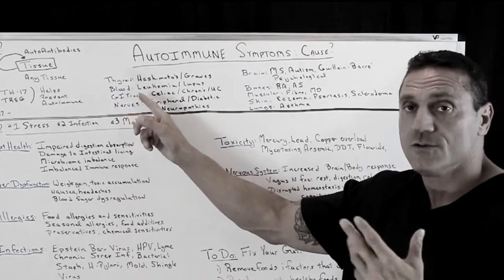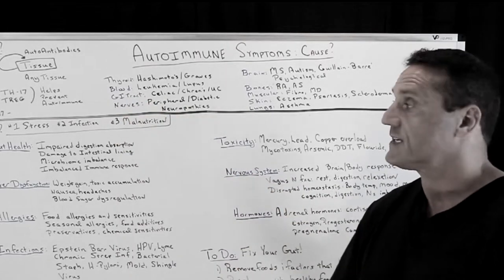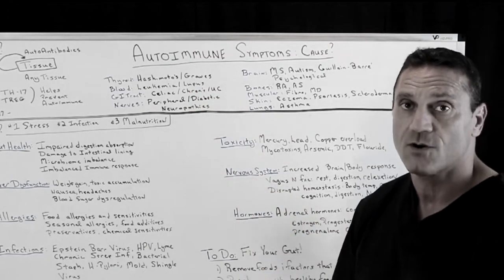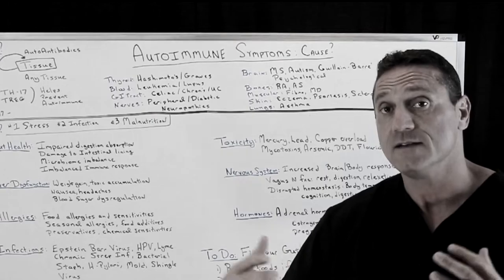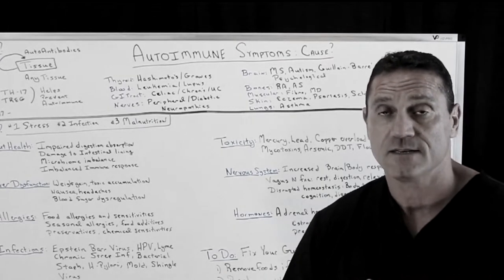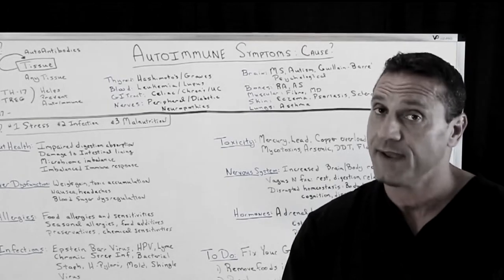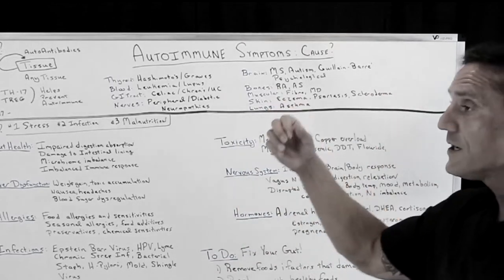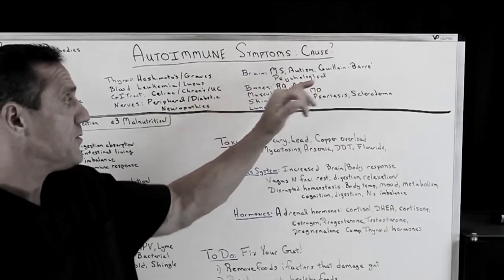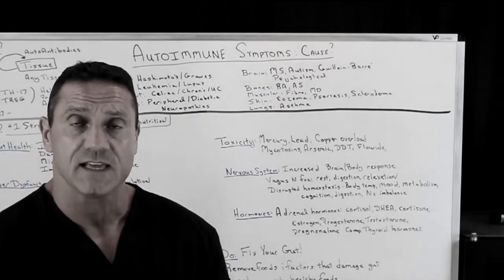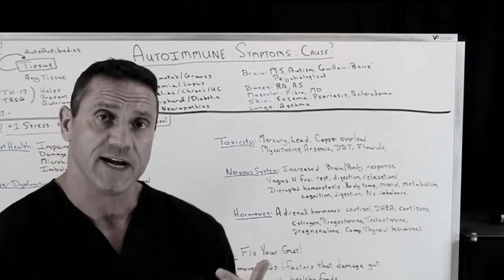When it comes to your blood: leukemia, lupus. Your GI tract: celiac disease, Crohn's, ulcerative colitis. The nerves: peripheral neuropathy, diabetic neuropathy. Diabetes type one is an autoimmune disease against the pancreas. It could be your brain: MS, autism, Guillain-Barré. You could have a psychological disease where your immune system is attacking your brain.